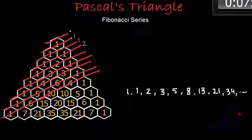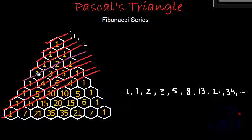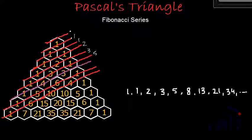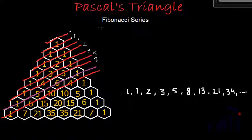The next line goes through 2 and 1, so 2 plus 1 gives us 3. And this line goes through 1, 3 and 1, so 1 plus 3 is 4, plus 1 gives us 5. The following line goes through 1, 4 and 3 — 1 plus 4 is 5, plus 3 gives us 8. Similarly, this line goes through 1, 5, 6 and 1 — 1 plus 5 is 6, plus 6 is 12, plus 1 is 13.